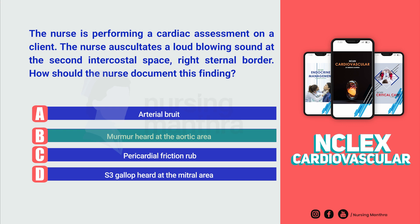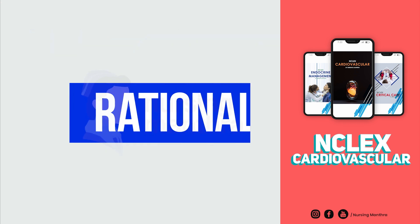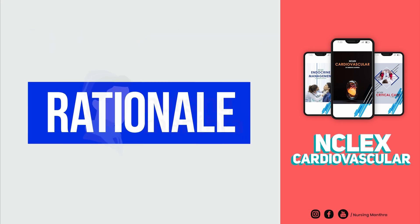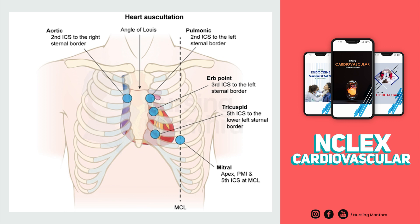The answer is murmur heard at the aortic area. You can see in this picture the aortic area is located at the second intercostal space to the right sternal border, which matches the location described in the question.